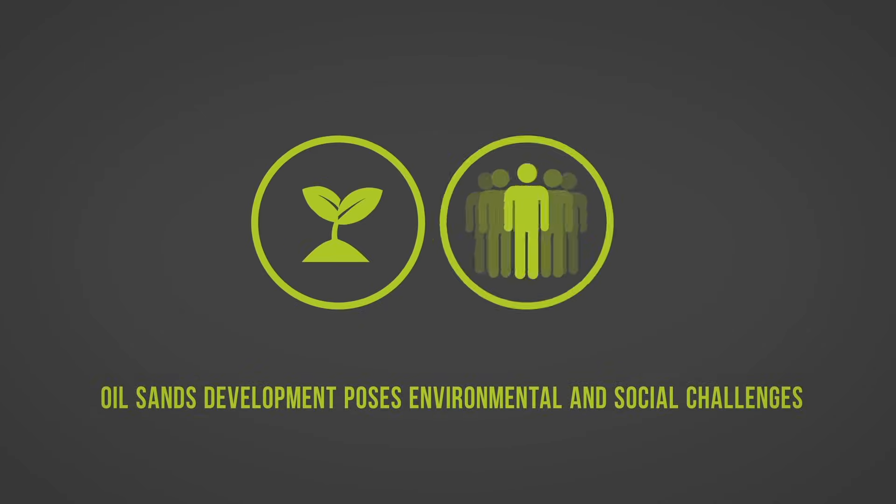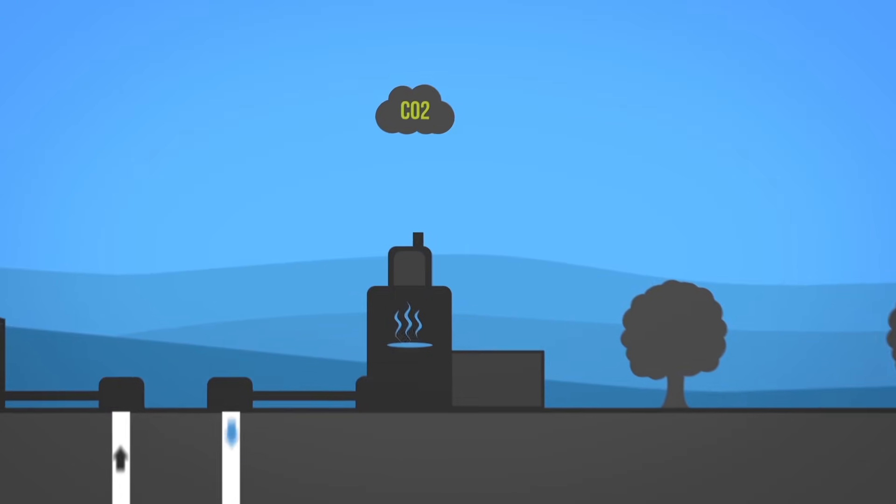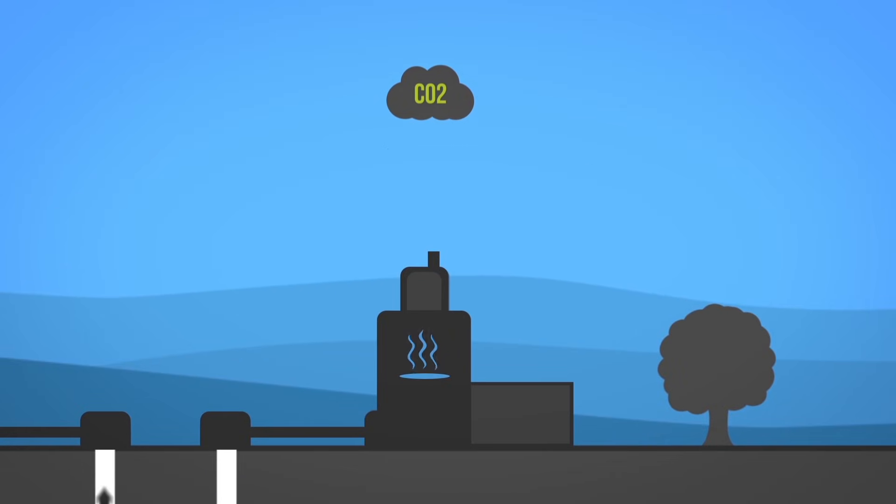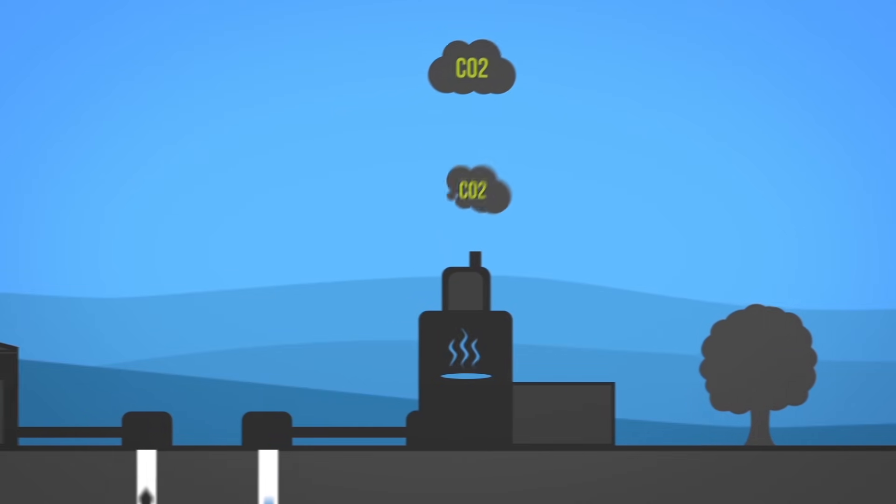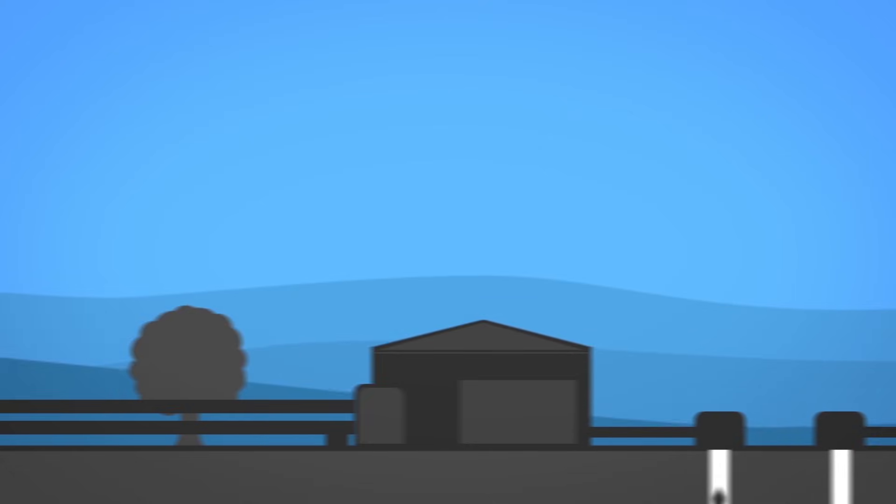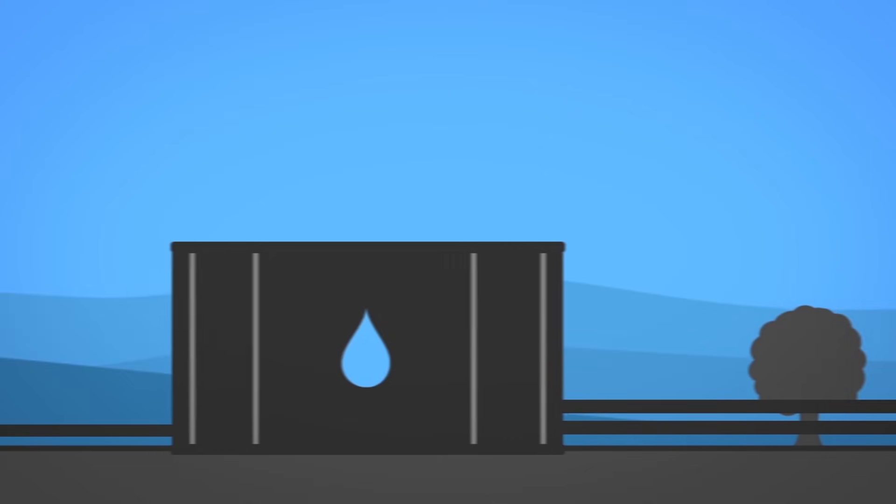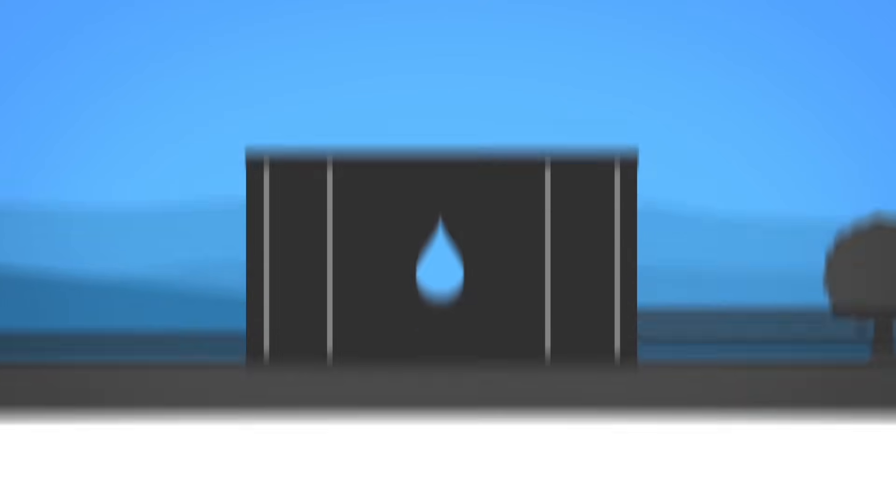Oil sands development poses environmental and social challenges. The crude derived from oil sands is more carbon-intensive than conventional crude. This is due to the greenhouse gas emissions associated with the production techniques used in the oil sands. Other environmental challenges include heavy water use, which in most cases comes from freshwater sources.